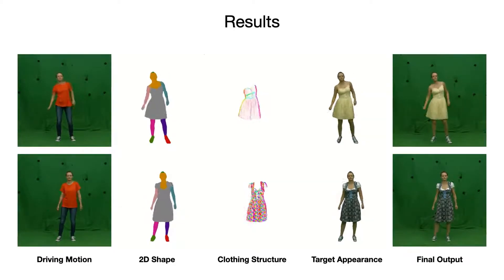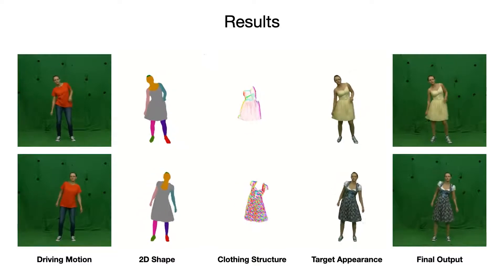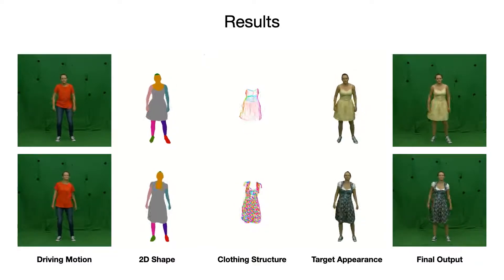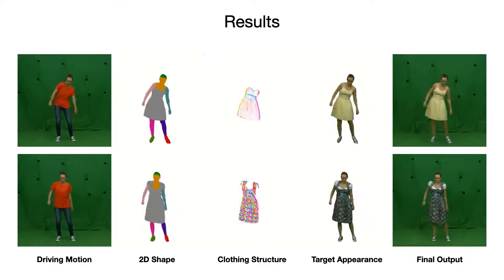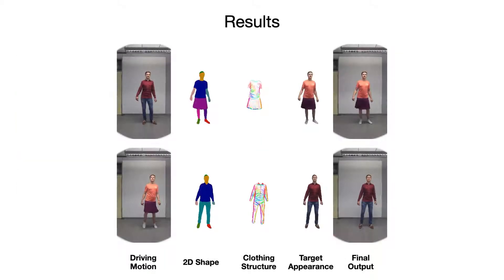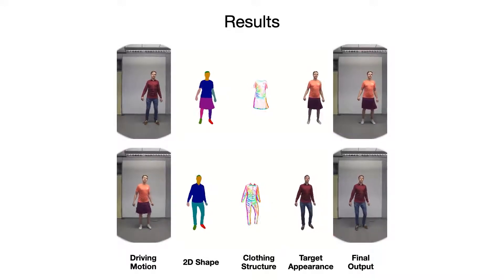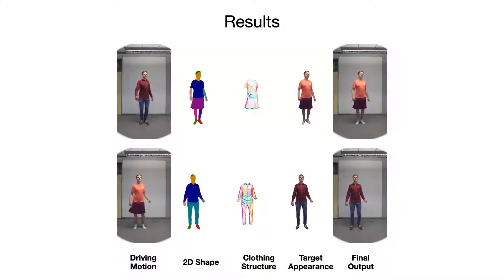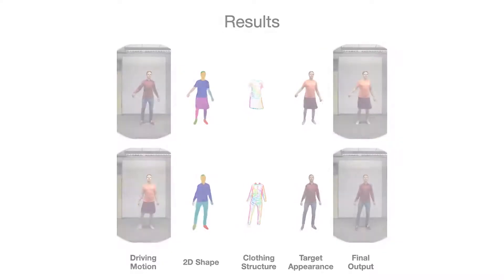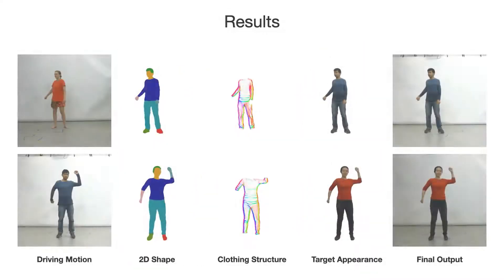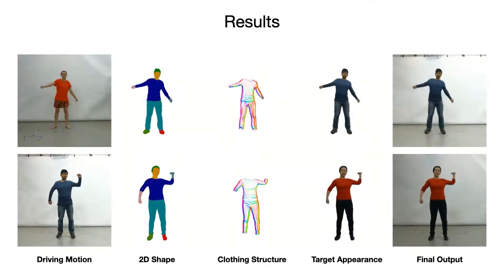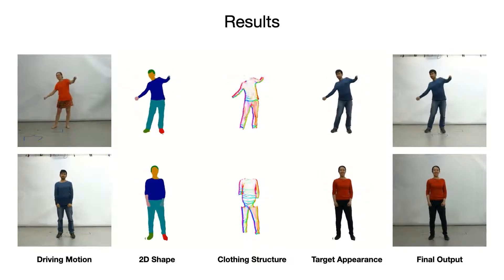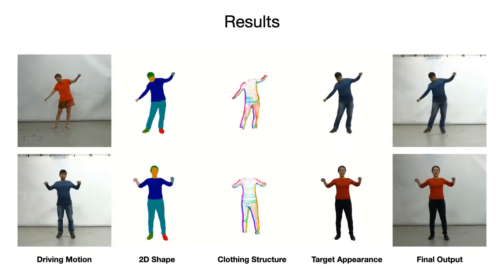Here we show results for several reenactment scenarios. Note how our framework produces temporally coherent representations of 2D shape and clothing structure, which result in realistic swinging of the actress's dress, and preserve high-frequency details in the rendered wrinkles and textures. Our method is able to transfer motion between subjects of different build and gender, while keeping the original target identity.